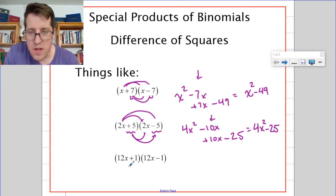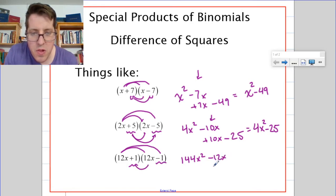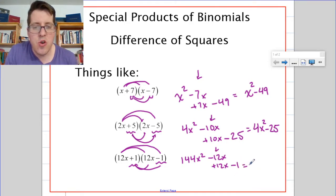For the last one, again, one positive, one negative. We FOIL. Our firsts give us 144x squared. Our outers give us minus 12x. Our inners give us plus 12x, and our lasts give us minus 1. When we combine like terms, we get 144x squared minus 1.